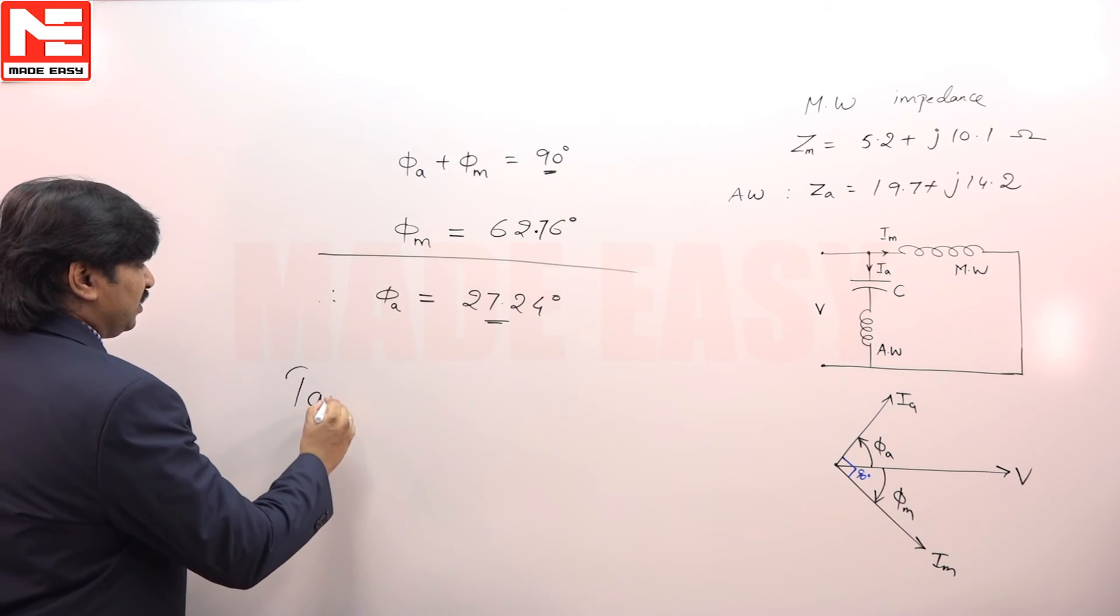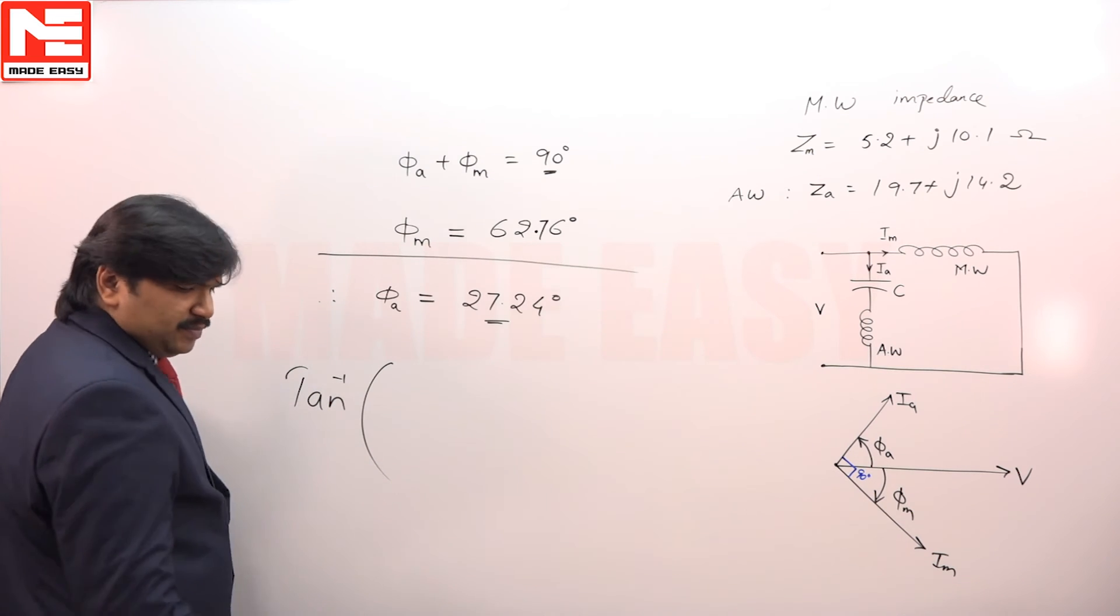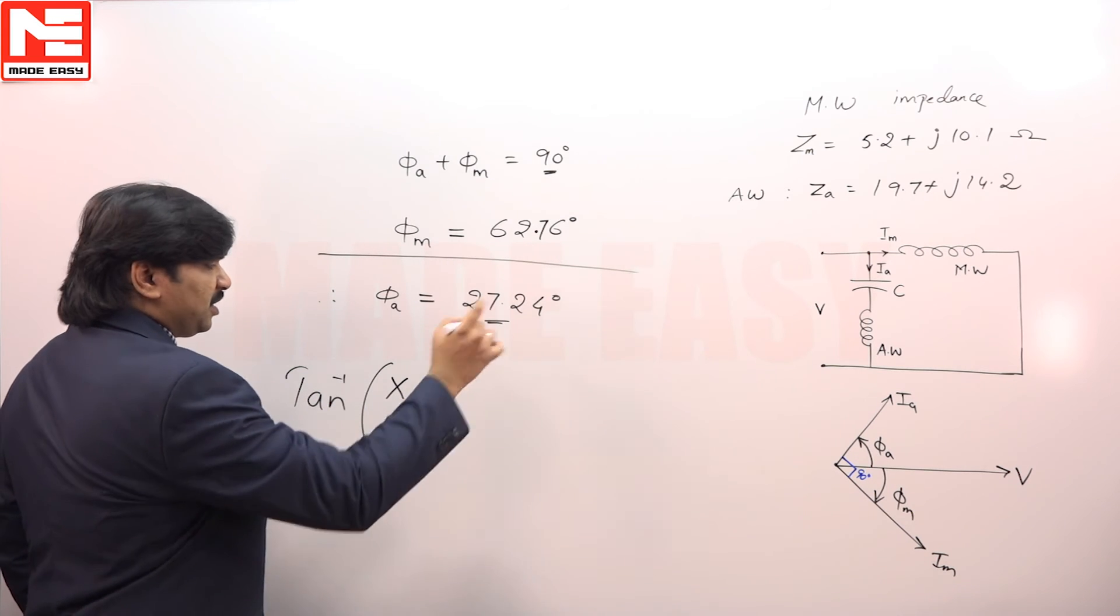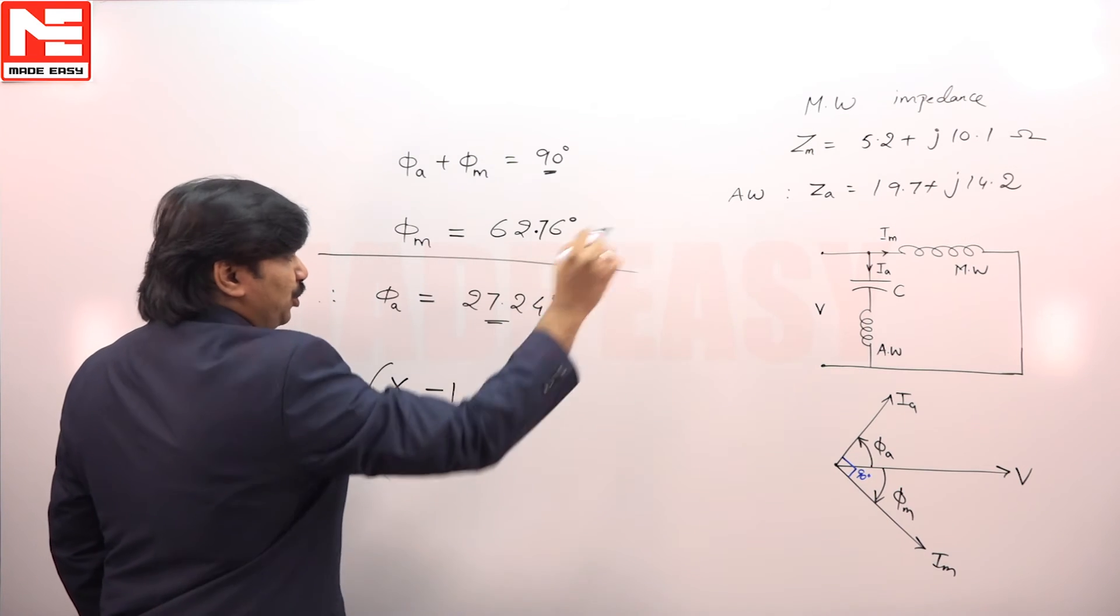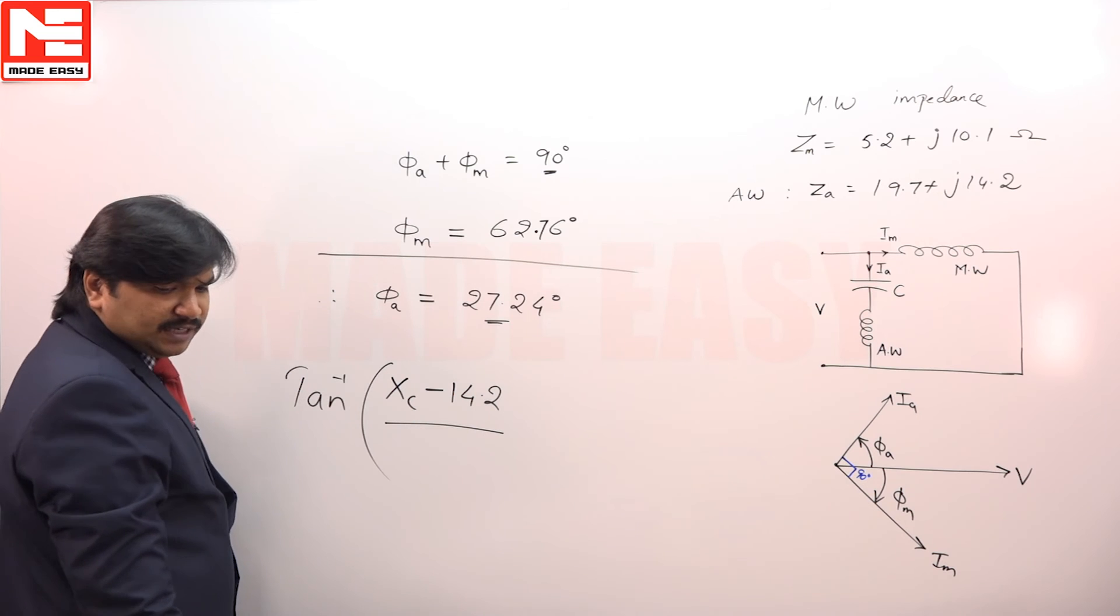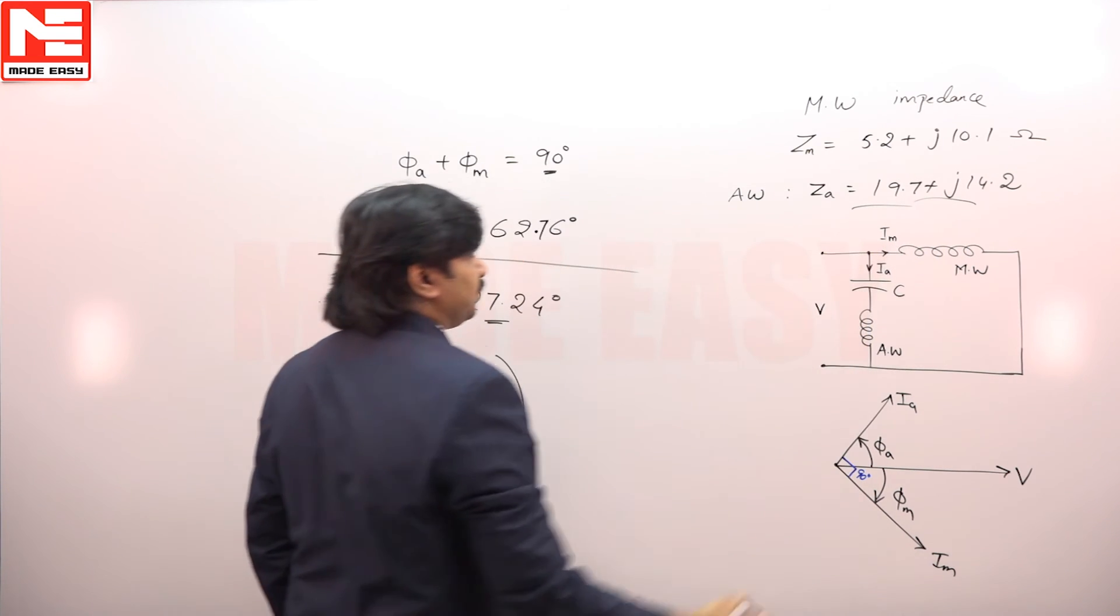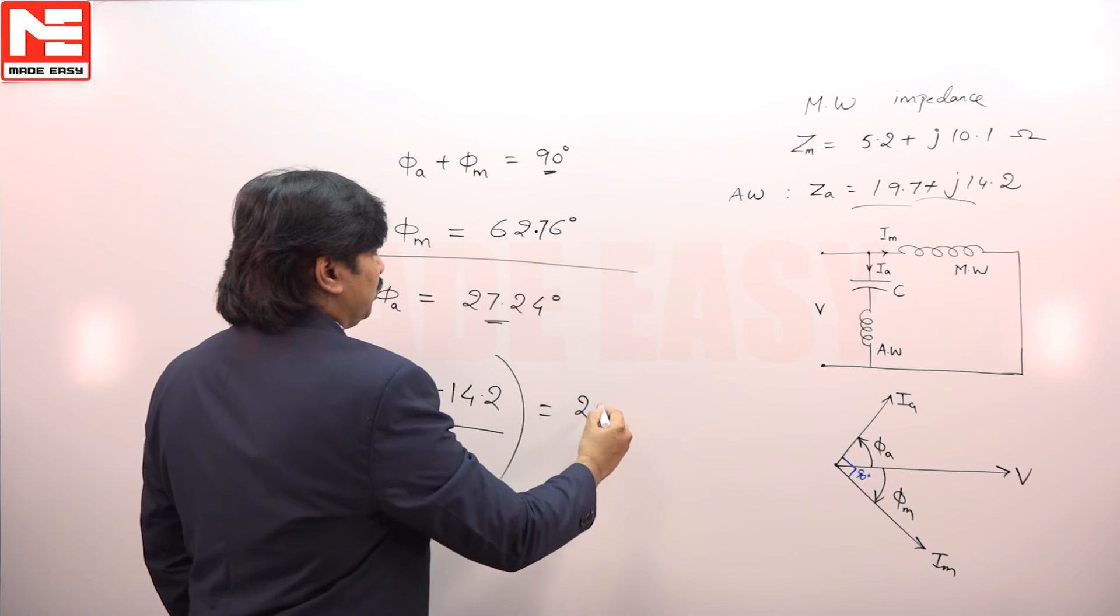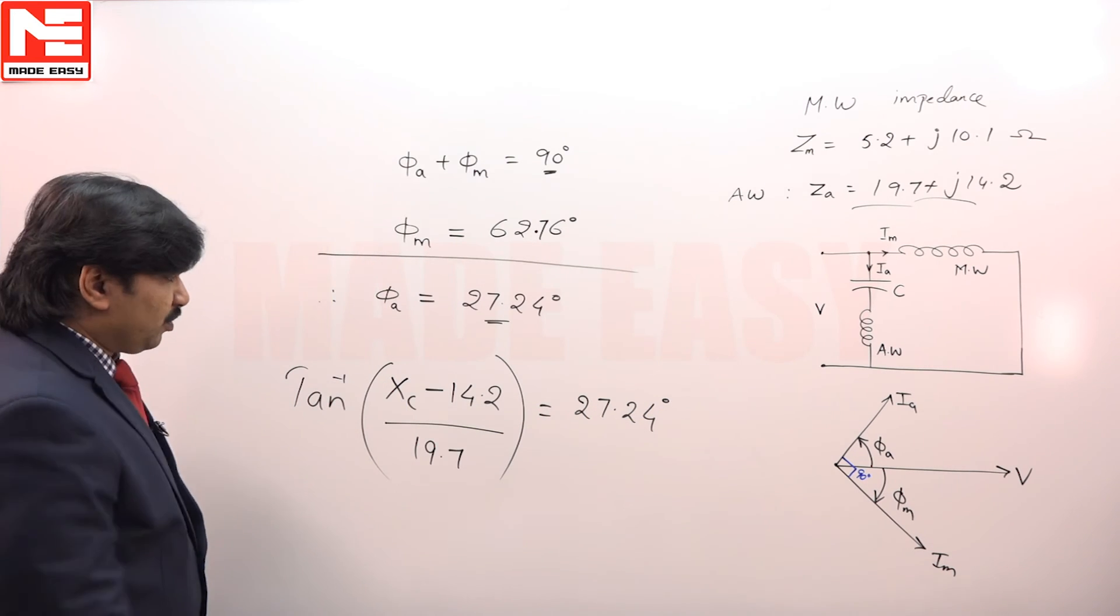We can write: tangent equals X_c minus 14.2 divided by 19.7, from the given parameters, which should equal 27.24 degrees.